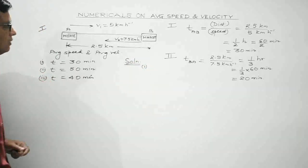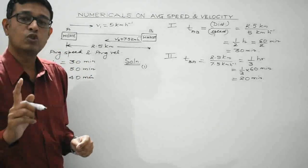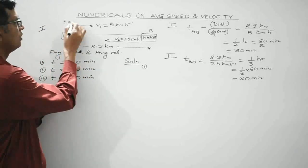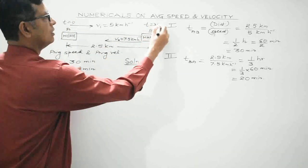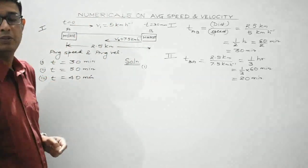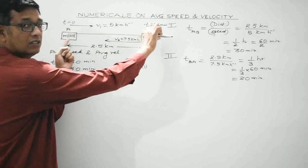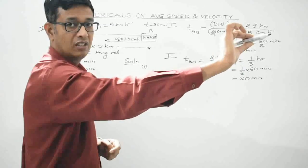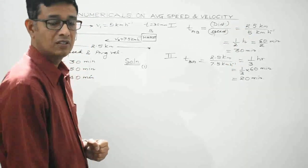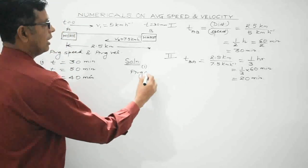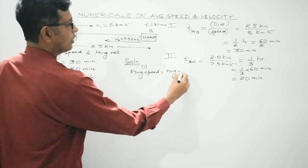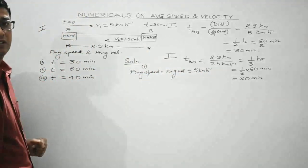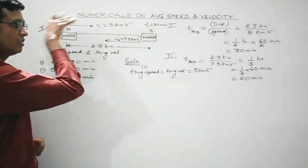For Part 1 — after a duration of 30 minutes — the person has travelled from A to B along a straight path in the same direction. Whenever a body moves along a straight path in the same direction, its average speed equals average velocity. So both equal 5 km per hour, since the speed is uniform throughout.